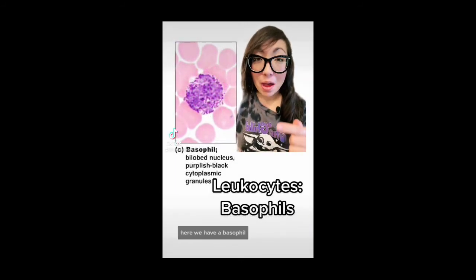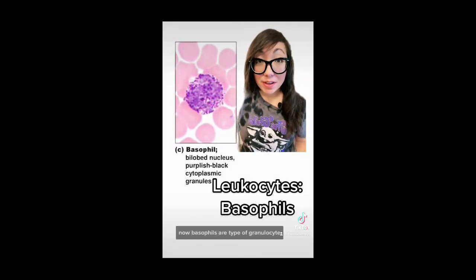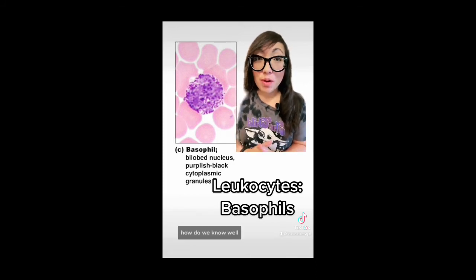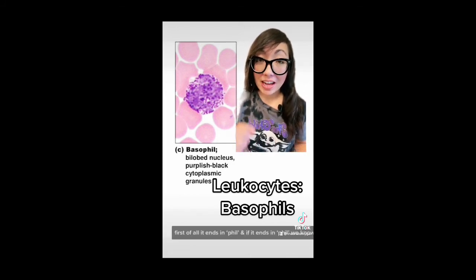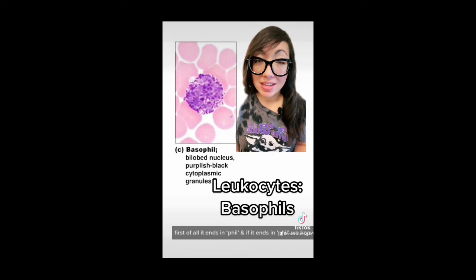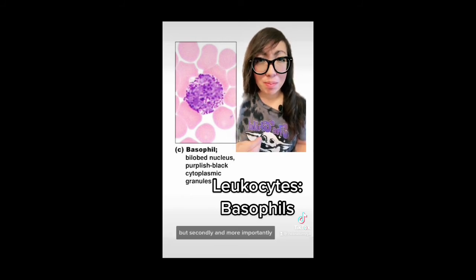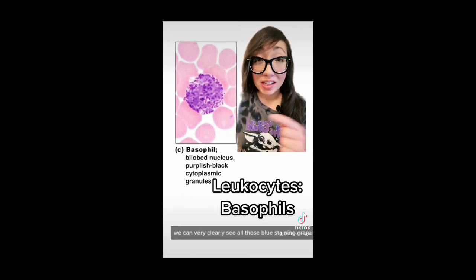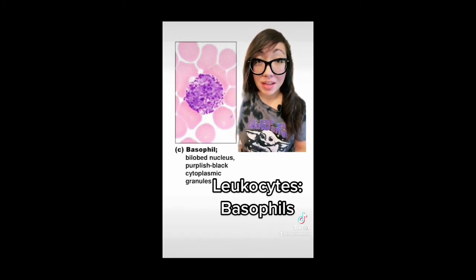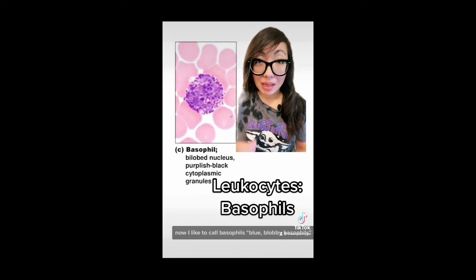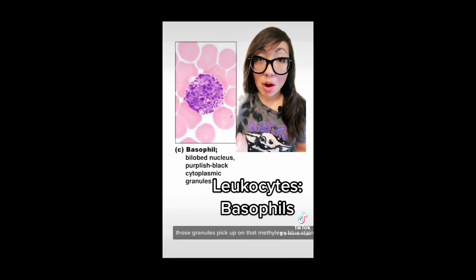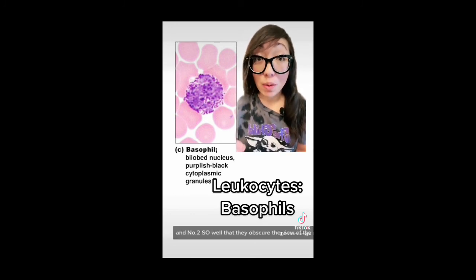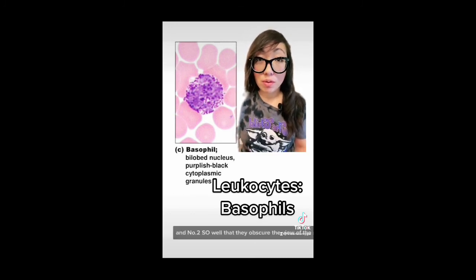Here we have a basophil. Basophils are a type of granulocyte. How do we know? First, it ends in 'phil,' meaning it's a granulocyte. But secondly, and more importantly, we can very clearly see all those blue staining granules within the cytoplasm. I like to call basophils 'blue blobby basophils' because those granules pick up on the methylene blue stain very well — so well, in fact, that they obscure the view of the nucleus.